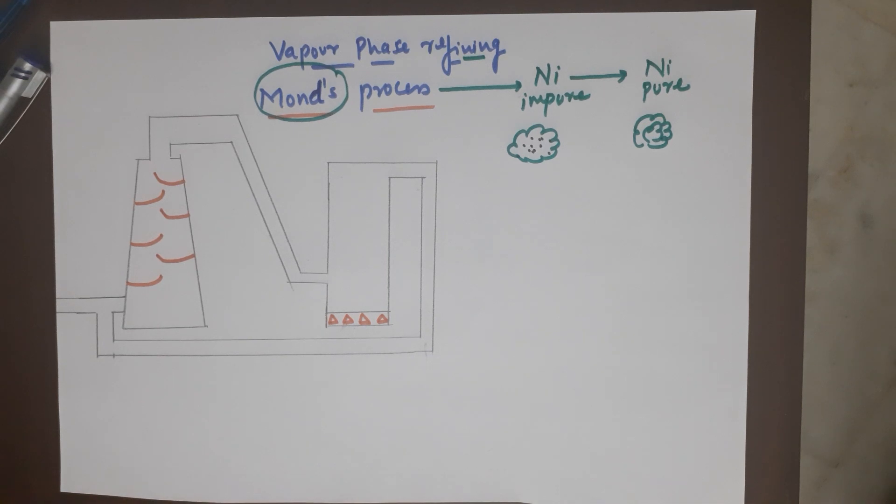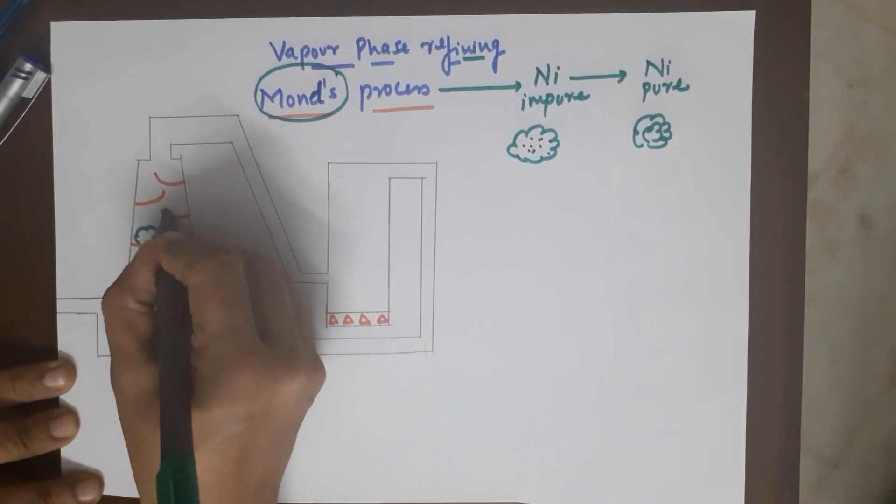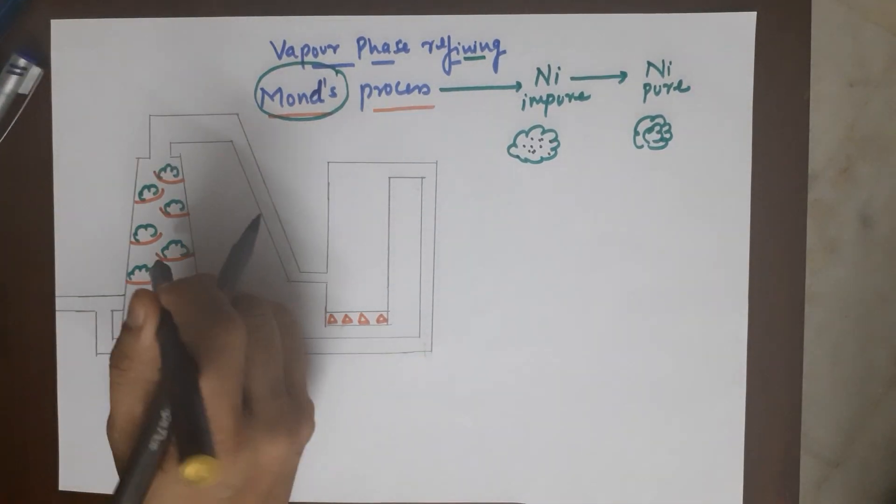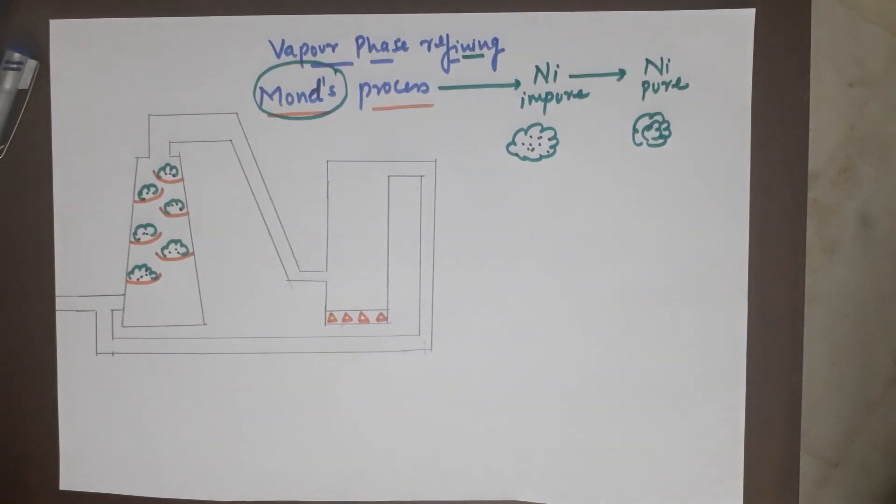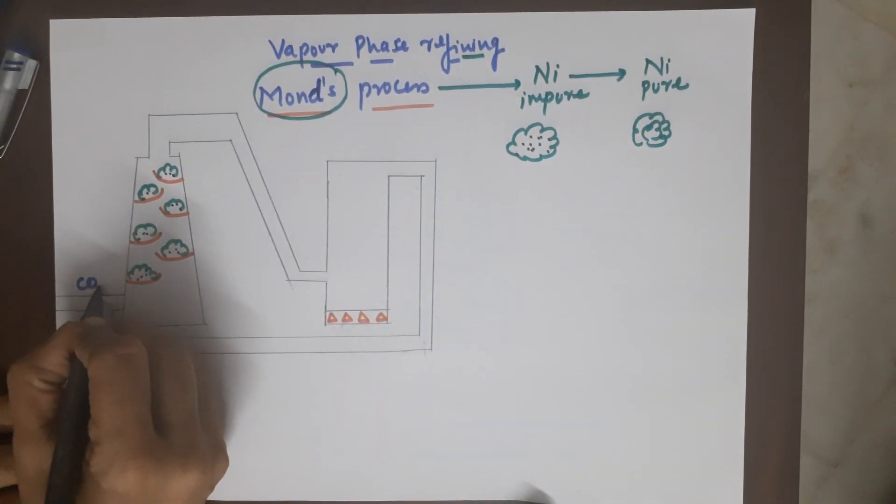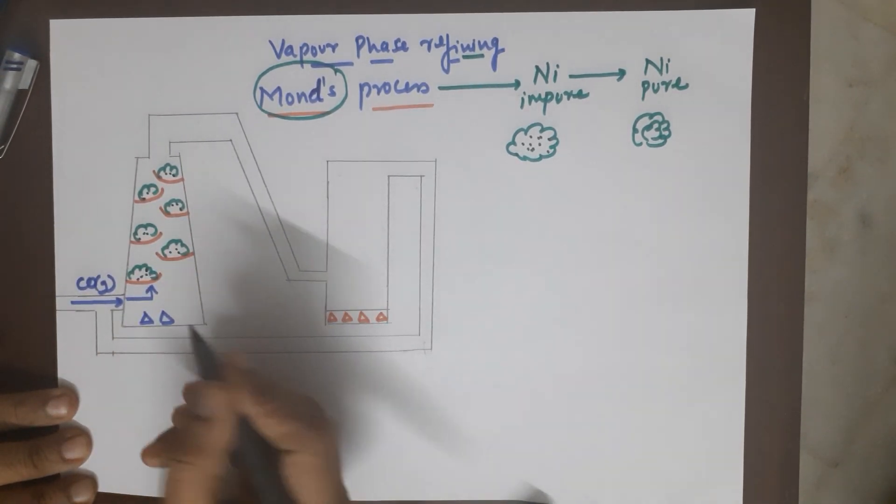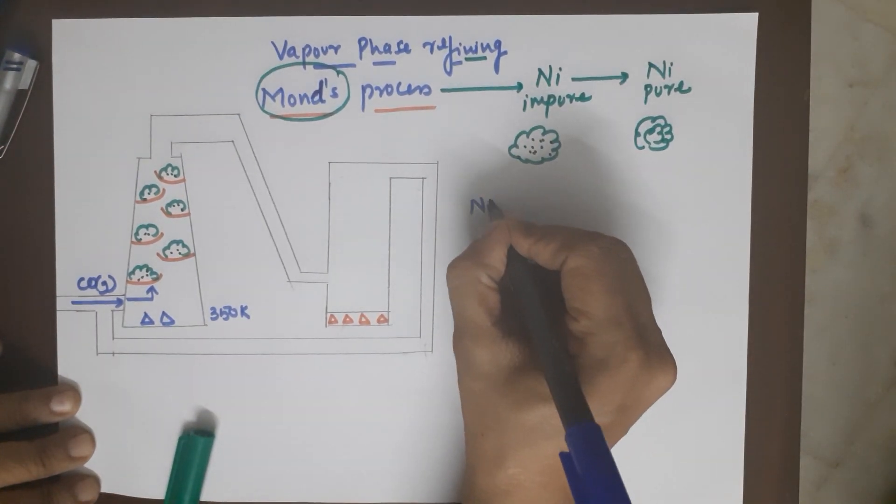Now the first chamber that we have contains your impure nickel. These are the impurities in it. Now this impure nickel, you are heating it in the presence of a reagent which is carbon monoxide gas. This carbon monoxide gas is purged in from here, it goes up, and you are heating it also. The heating is around 350 K, but you do not need to remember the temperature. You only need to understand that your impure nickel combines with carbon monoxide to form a compound nickel tetracarbonyl.